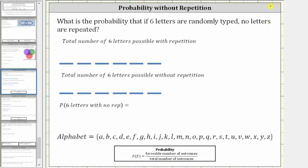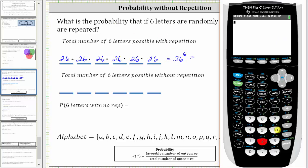Let's first determine the total number of six-letter sequences possible with repetition. Since there are 26 letters in the alphabet, there are 26 ways to select the first letter. Because repetition is allowed, there are 26 ways to select the second letter, 26 ways to select the third letter, and so on. There are 26 ways to select each of the six letters, and therefore the total number of six-letter sequences with repetition is 26 raised to the sixth power, which equals 308,915,776.